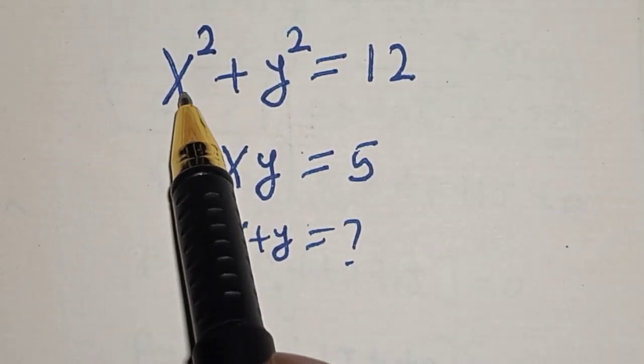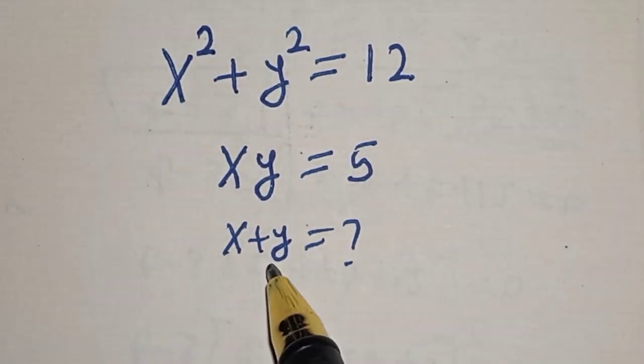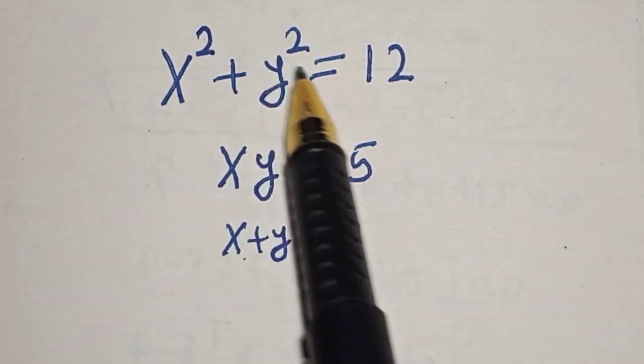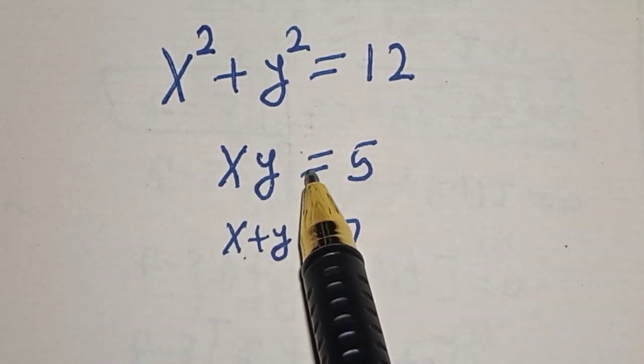Hello, welcome to Magist. In this class we quickly want to find the value of x plus y from this equation: x squared plus y squared is equal to 12, and xy is equal to 5.